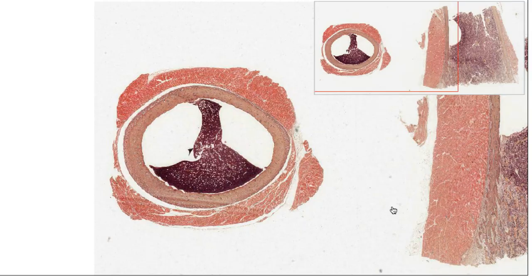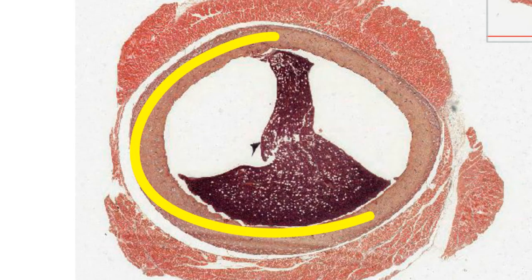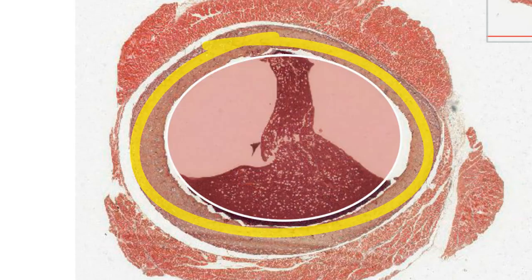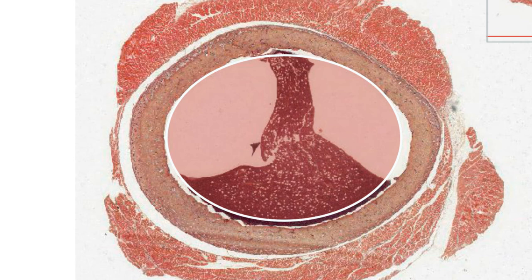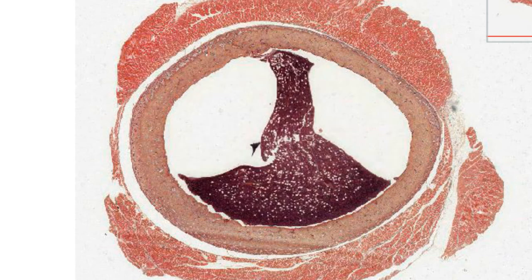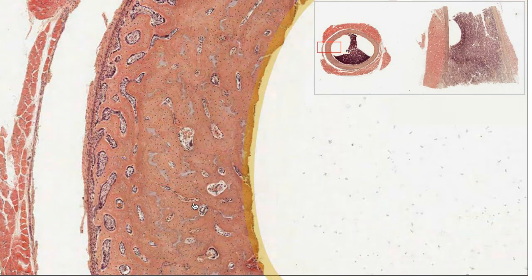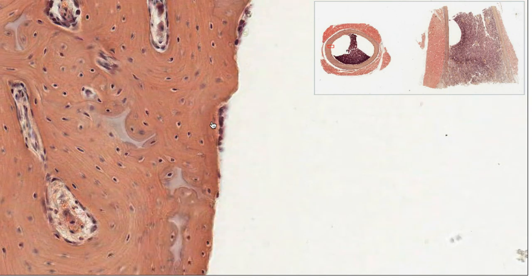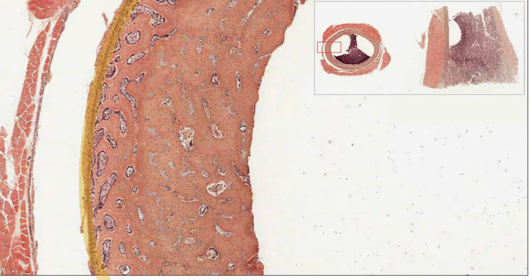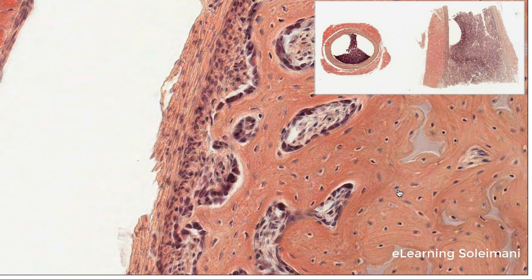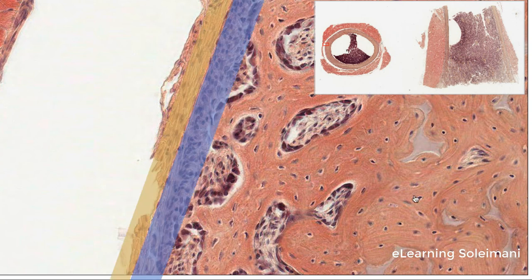In this slide we have a cross section of compact bone. The bone marrow located at the center of this bone is clearly visible. Adjacent to the bone marrow lies a layer known as the endostium, which contains osteoblasts. The outermost layer of the compact bone is called the periostium, which is composed of two distinct parts.